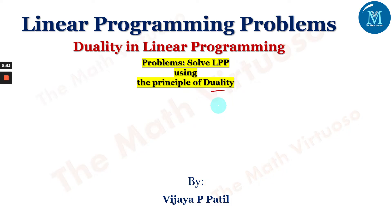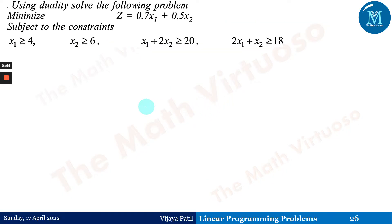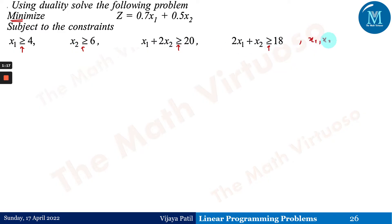Using duality, solve the following problem: minimize z equals 0.7x1 plus 0.5x2, subject to constraints 1 through 4. The question is a minimization problem and all constraints are already in the greater-than-or-equals-to form. There is also a non-negativity constraint: x1, x2 greater than or equals to 0.